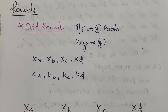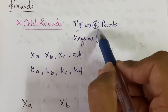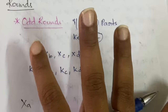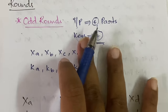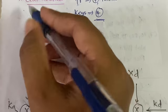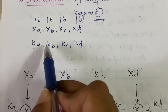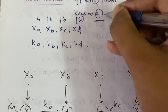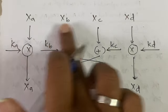Now let us see what happens inside each round. Odd rounds are easier to understand. In odd rounds, you have four inputs and four keys. Let us denote the input parts as Xa, Xb, Xc, and Xd — the number of input parts equals the number of keys.